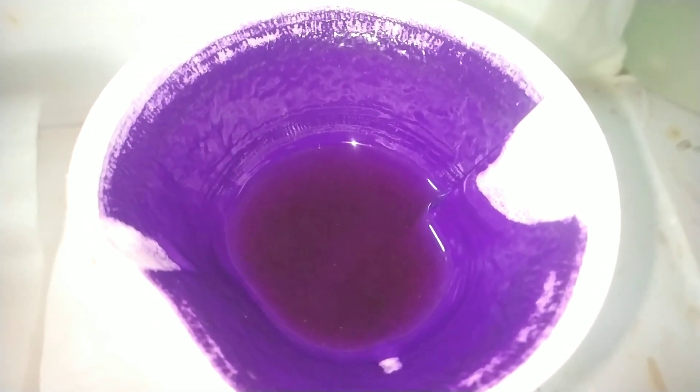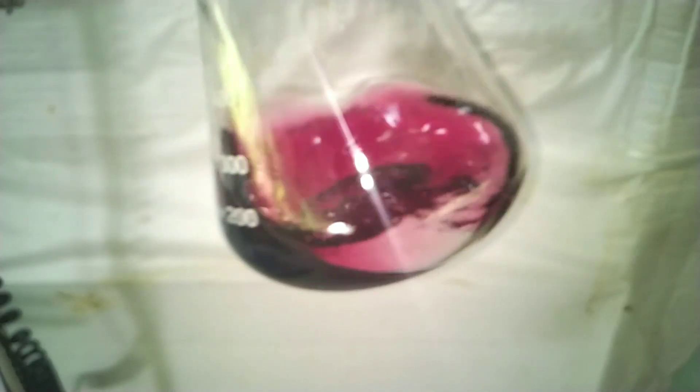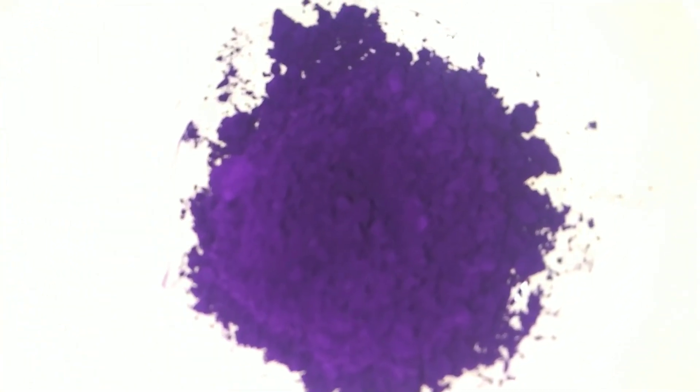In the filter paper we are left with this purple colored precipitate, and the filtrate is having a pink color resembling that of permanganate ions. The filtrate can be discarded. The product was then dried and weighed.